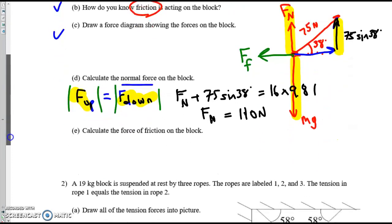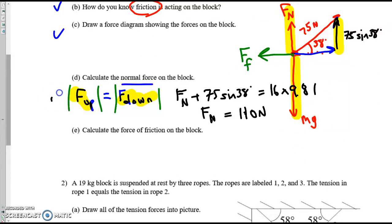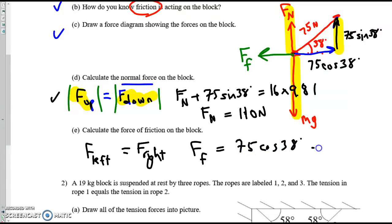Part E. Calculate the force of friction. Just as I balanced up and down, I balance left and right. There's only one force pointing left, friction. And only one force pointing right. It's this blue arrow, which is equal to 75 cosine 38. I calculate, and that's 59.